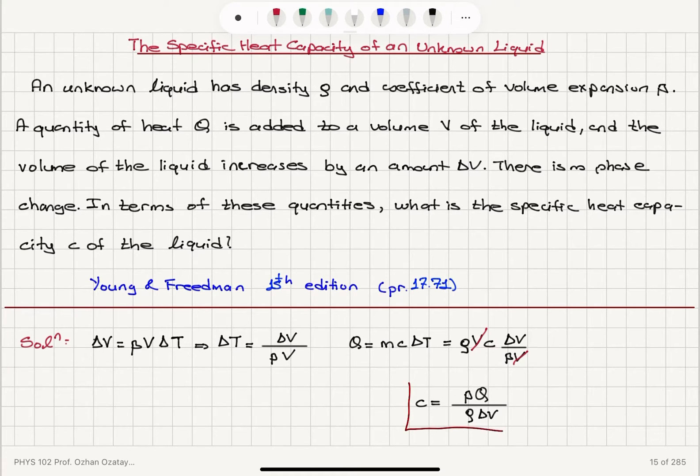So let me finally check if these are all given. β, the coefficient of volume expansion, is given. Q, amount of heat added, is given. ρ, density, is given. ΔV, change in volume, is given. So in terms of the given quantities, C is βQ over ρΔV.